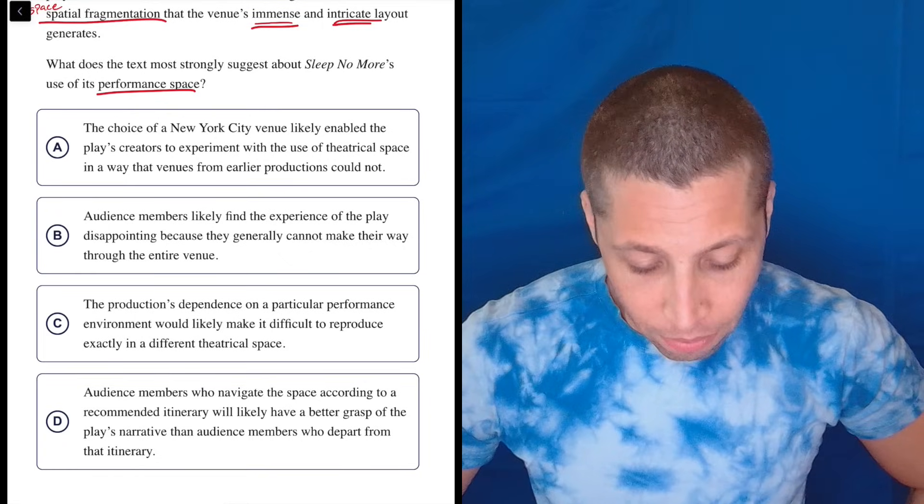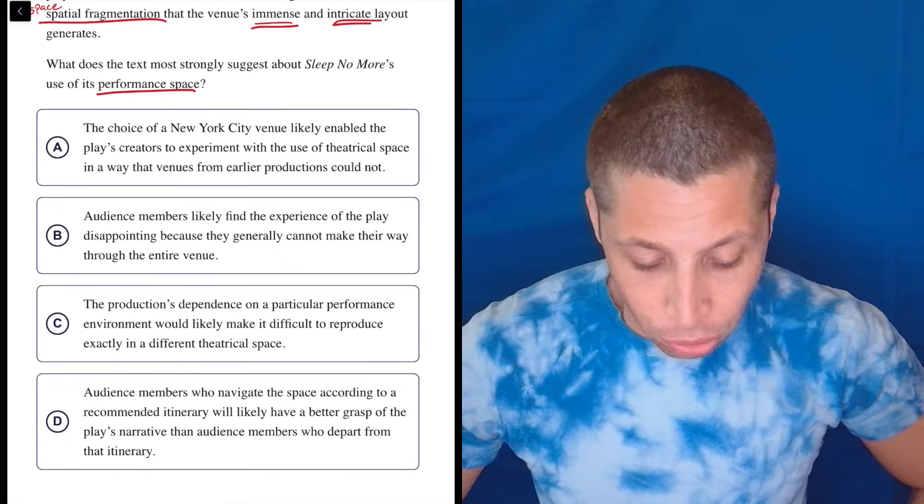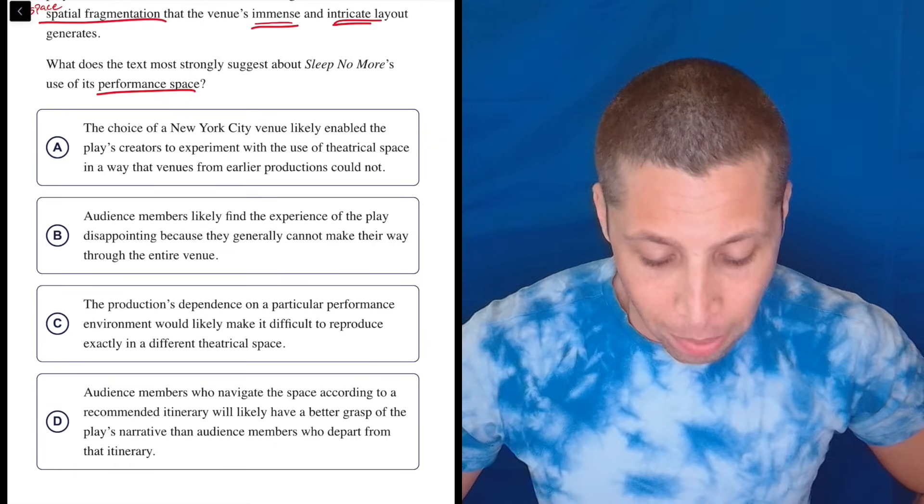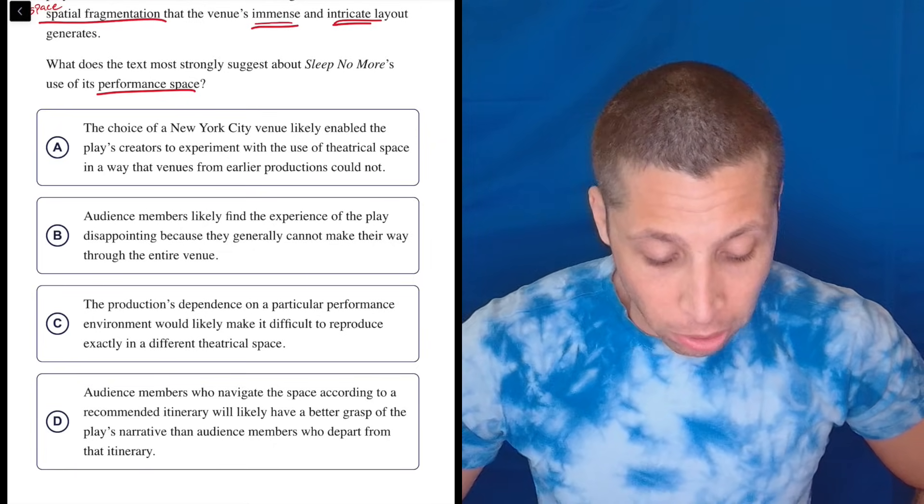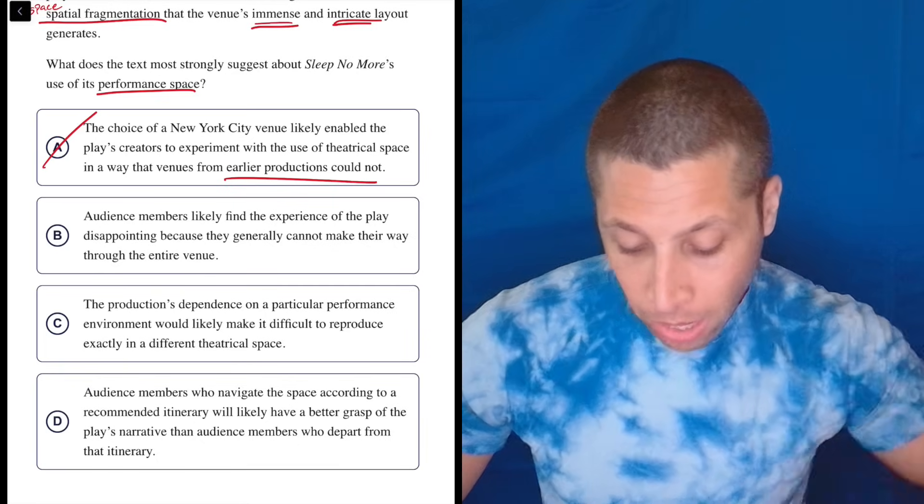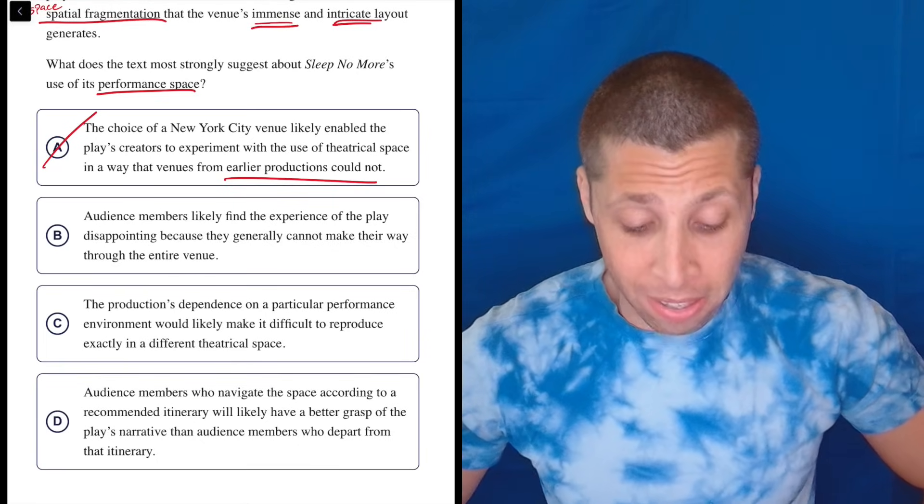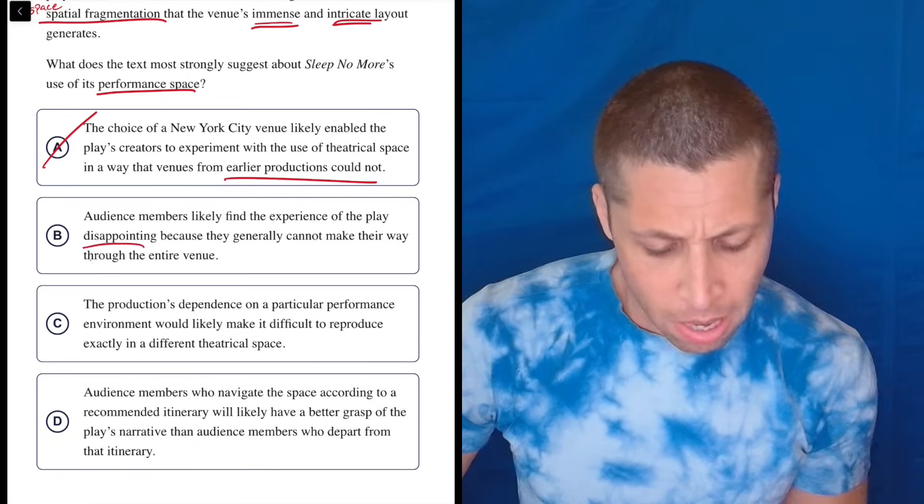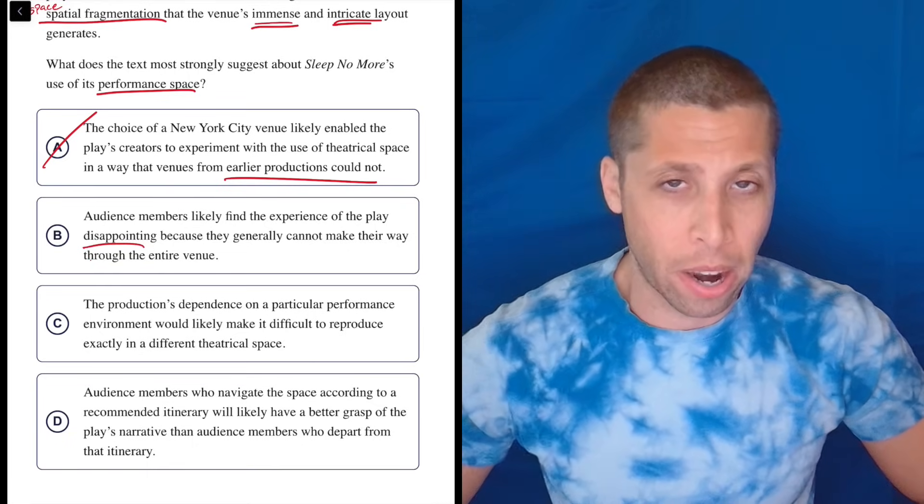So A, the choice of a New York City venue likely enabled the play's creators to experiment with the use of theatrical space in a way that venues from earlier productions could not. I don't know anything about the earlier productions, so I don't care. B, audience members likely find the experience of the play disappointing because they generally cannot make their way through the entire venue.